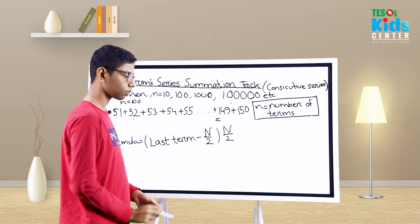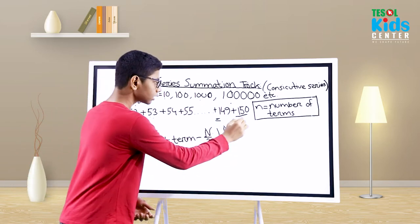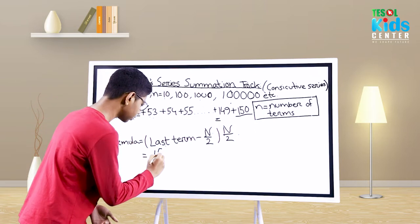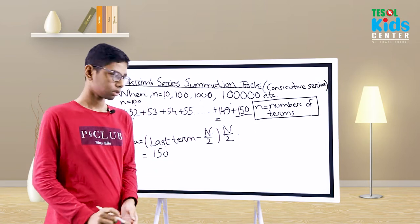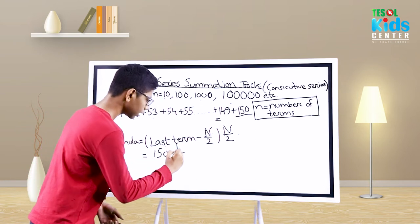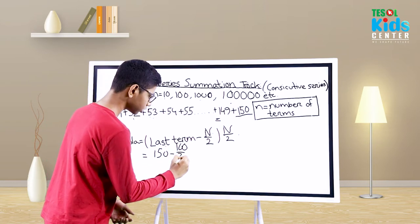Let's solve it. Our last term is 150. So according to the rule: 150 minus n, which is 100, so 100 divided by 2.